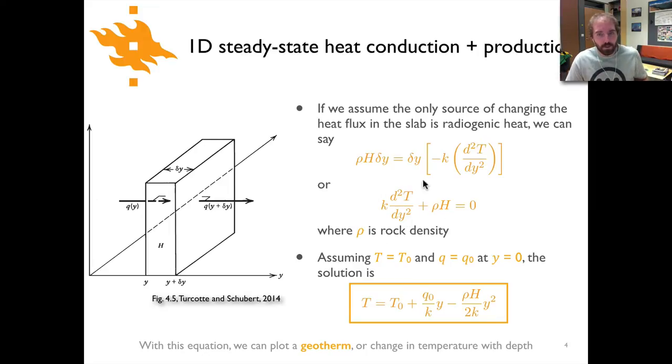If we make assumptions about the boundary conditions for this problem, we can assume that T = T0 and q = q0 at y = 0. So if this is depth and y = 0 is the surface, we assume we know the temperature at the surface equals T0 and the heat flux at the surface equals q0. If you solve this equation with those conditions, you'd be integrating with respect to temperature with constants of integration. This is our equation for heat conduction and heat production in one dimension. With this we can plot a geotherm, which is the change in temperature with depth. Our equation looks like T = T0 + (q0/k)y - (rho H / 2k)y². Not too complicated.